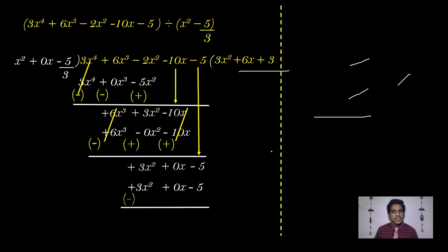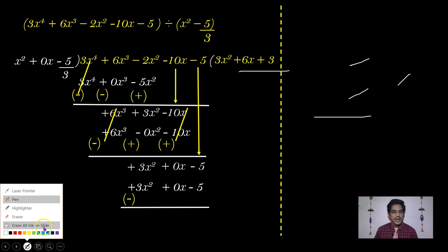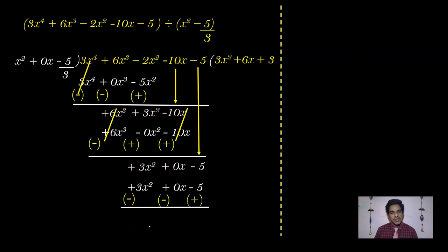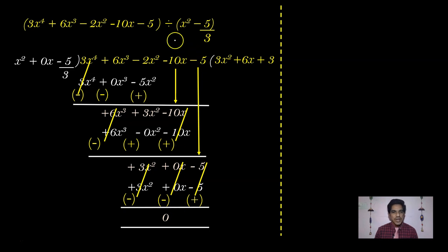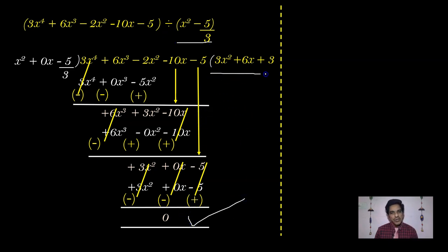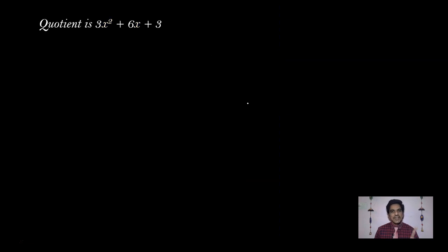Write 3x² + 0x - 5 in the dividend part. Change signs and do subtraction: 3x² - 3x² = 0, 0x - 0x = 0, and -5 + 5 = 0. The remainder is 0. This confirms that x² - 5/3 is indeed a factor. The quotient is 3x² + 6x + 3.